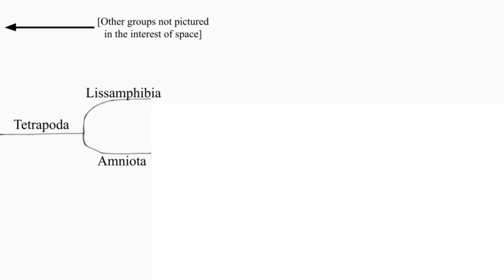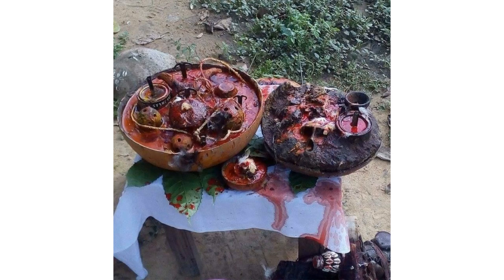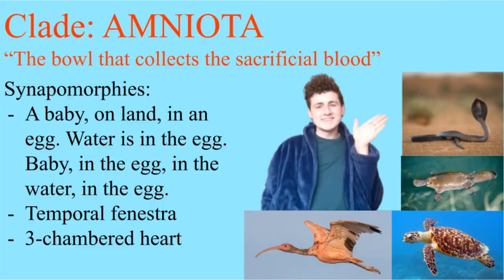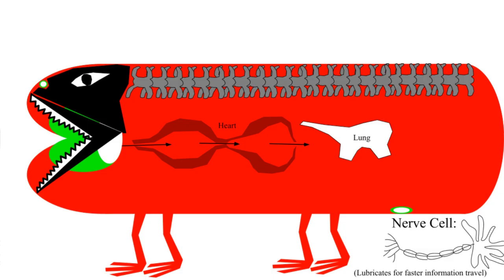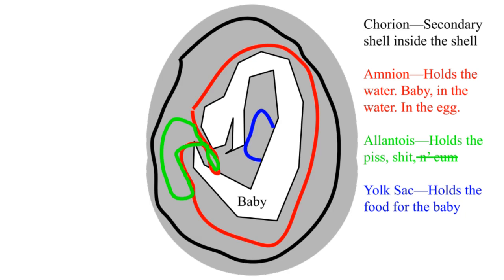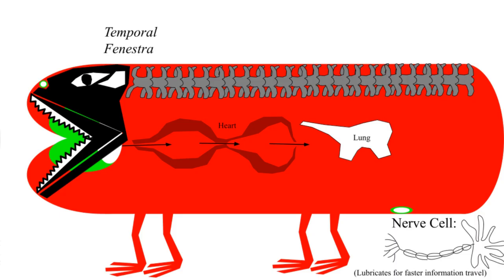Tetrapoda divides into the smooth double lives and the bowl to collect the sacrificial blood. That is actually the etymology of amnion. The difference is marked between the two. Lissamphibians breathe through their skin and have no holes in their skull. Amniotes have a special egg with a shell, have a hole on either side of their skull, and have a three-chambered heart.